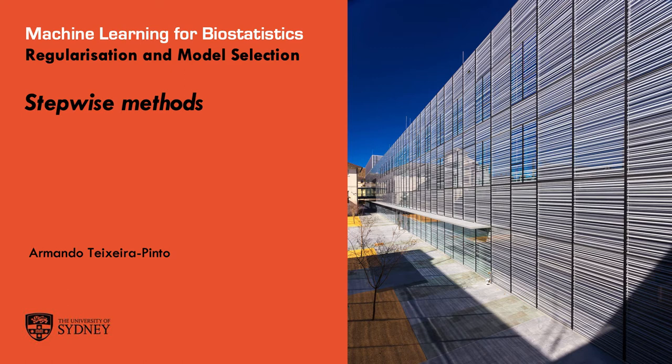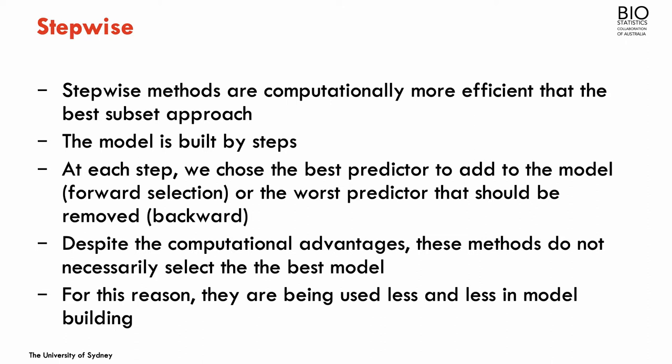In the previous section we discussed a method that searches for the best subset of predictors by fitting all the models corresponding to all possible combinations of the predictors. We said that this method is quite inefficient because it involves fitting many models even with a moderate number of predictors. So stepwise methods are algorithms that try to be more computationally efficient by taking shortcuts in the search for the best subset of predictors.